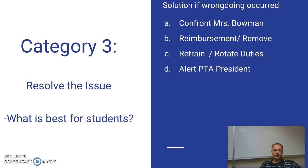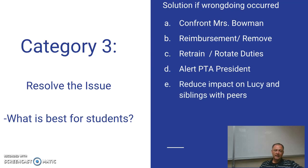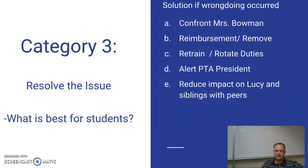If wrongdoing is going on, it's best to alert the PTA president so they are aware and it doesn't impact anything else. The PTA probably works with multiple schools, and they would want to know if one of the parents is causing issues. Whatever we do, this is a parent issue, not a student issue, and we want to do whatever we can to reduce the impact on Lucy and her siblings and protect those kids.